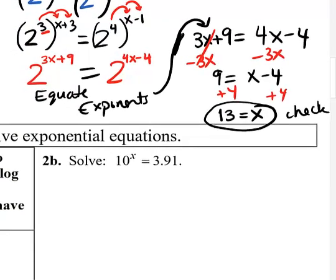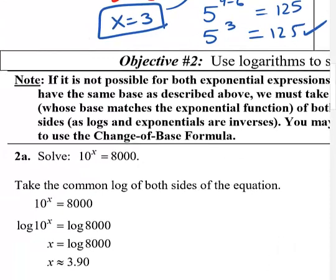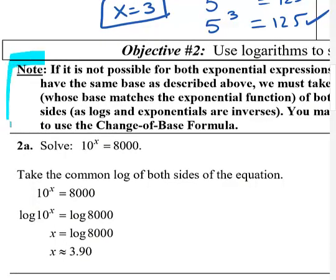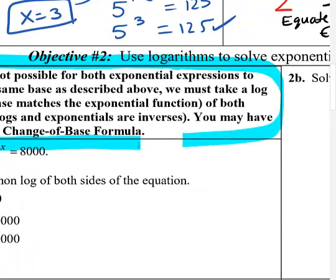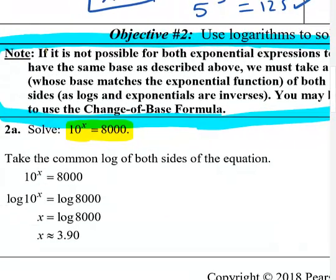That's the idea for the simple method — some guessing work is involved to see what base both sides can be written as. Objective 2 shows what to do when it's not possible to write both sides as the same base. In that case, we use the more difficult method. For example, solving 10^x = 8000: there's no way to rewrite 8000 as 10 to a power.